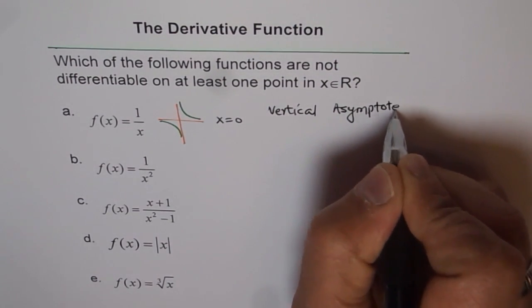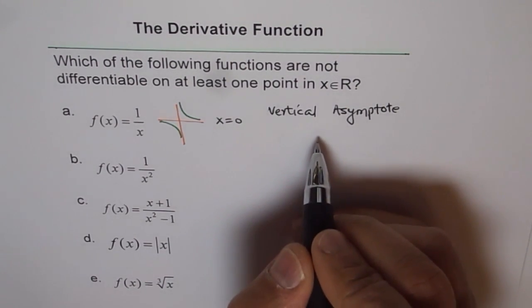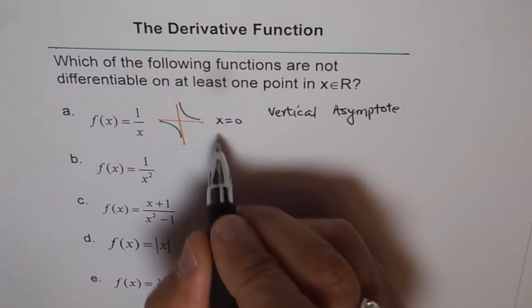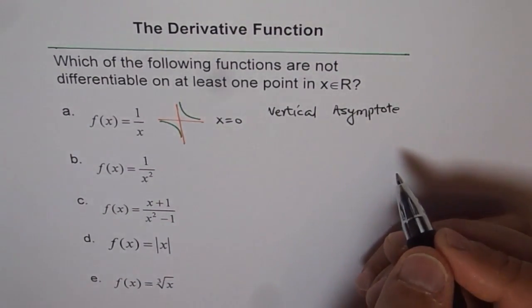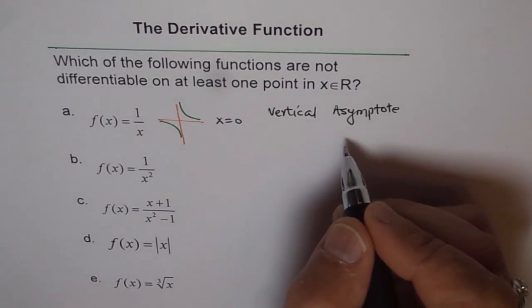So if we have a vertical asymptote, then at that point, the function is not differentiable. So at x equals 0, we have a vertical asymptote, and that's a kind of discontinuity. Function is not differentiable.